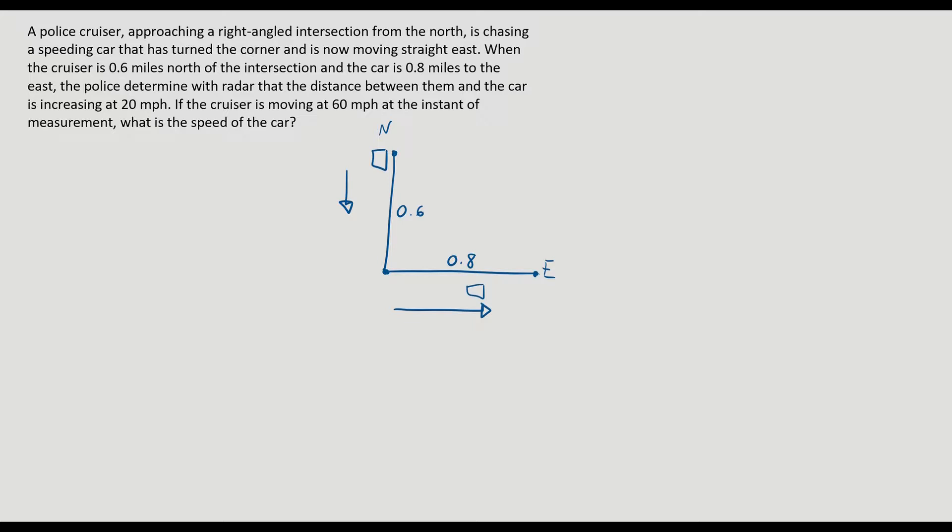The police determines with a radar that the distance between them and the car is increasing at 20 miles per hour. So here, the distance between the police and the car, this value right here, the hypotenuse of what we can see is a right triangle, that is going at 20 miles per hour. The rate of that is 20 miles per hour.